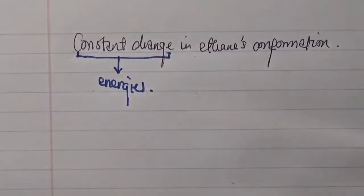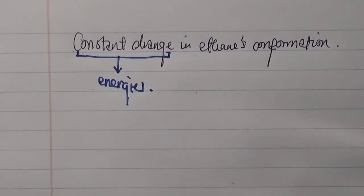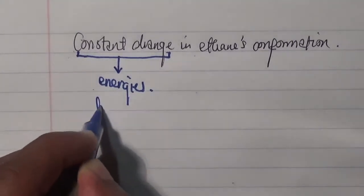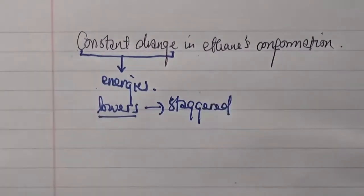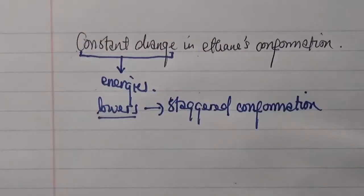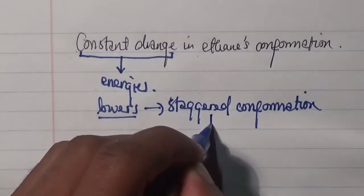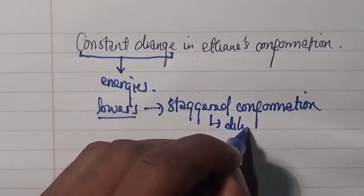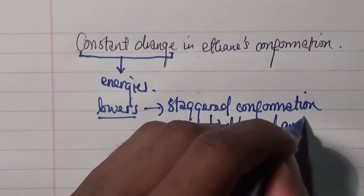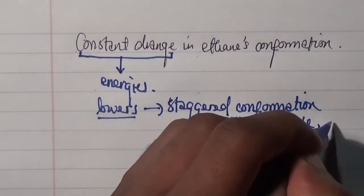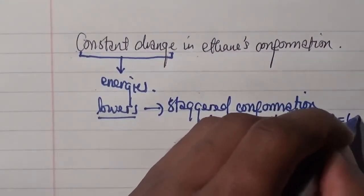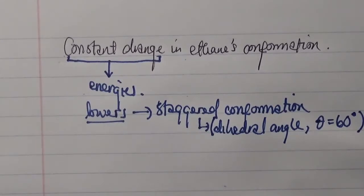We're going to explore the energy aspect of ethane's conformations. In this case, the lowest energy conformation is known to be the staggered conformation. This staggered conformation, as we recall, is a type of dihedral angle which is 60 degrees. And this will generate a lower energy.